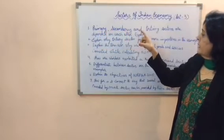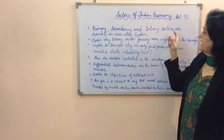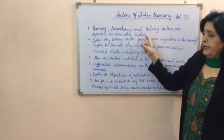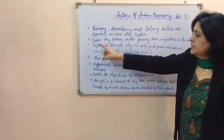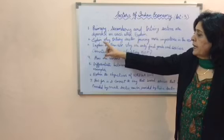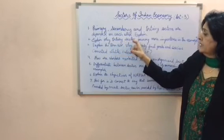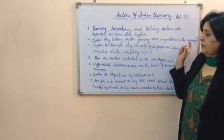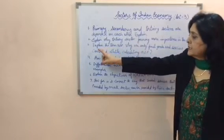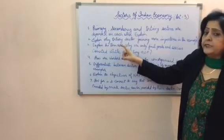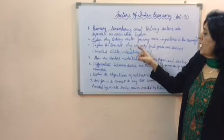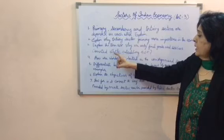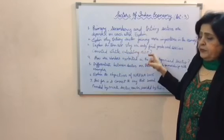Now, some questions on this topic. First, primary, secondary, and tertiary sectors are dependent on each other — explain. Next, explain why the tertiary sector is gaining more importance in the economy. Next, explain the term GDP and why only final goods and services are counted while calculating GDP.